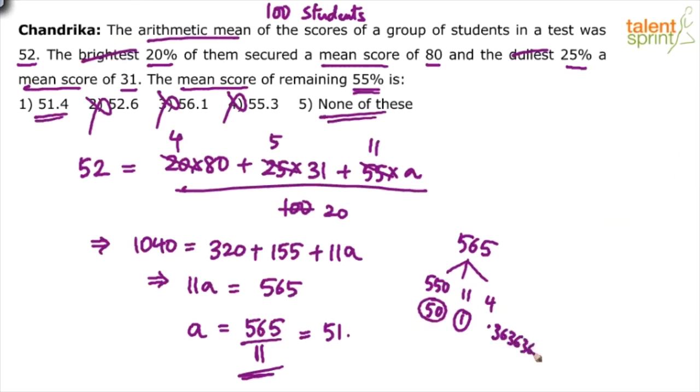4 by 11 is how much? 0.36, in fact 0.363636 and so on. So what's the overall answer? 50 plus 1 plus 0.363636, 51.36 and goes on up to infinity right. This is what you must do mentally.